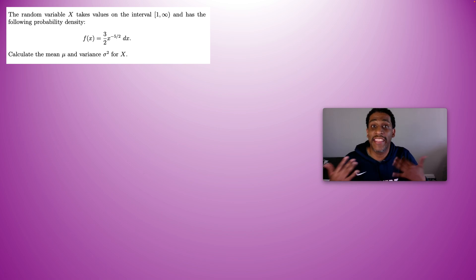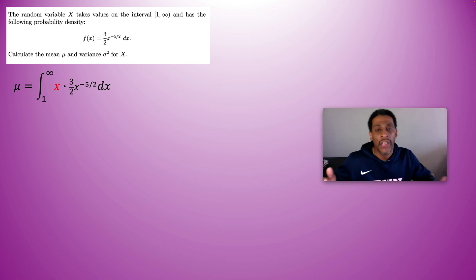How do you calculate the mean? There's a formula for it. The formula is that we have to take the probability density function and multiply it by x, and then integrate that officially over the entire real line. But since the function is 0 for anything from minus infinity up to 1, then we only integrate from 1 to infinity.